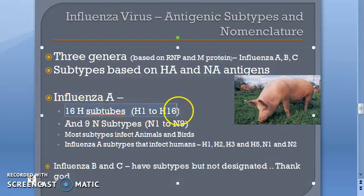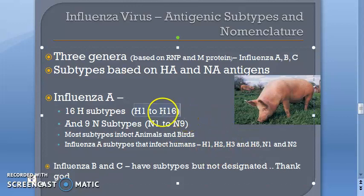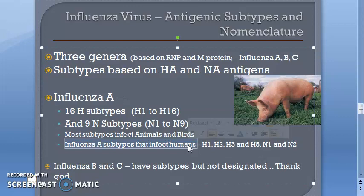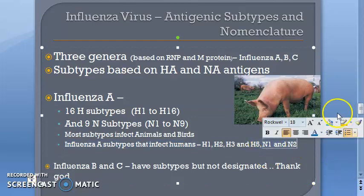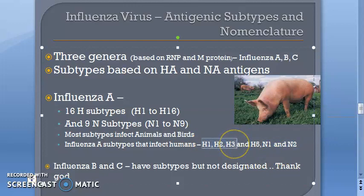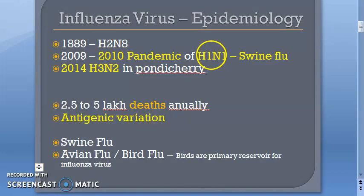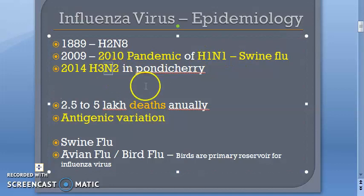There are 16 H subtypes — H1 to H16 — and 9 N subtypes — N1 to N9. Most subtypes affect animals and birds. The ones of human importance are H1, H2, H3, H5, N1, and N2. These have been seen in epidemiology — H1, H2, H3 from past pandemics and H5 from avian influenza.